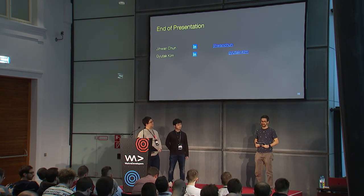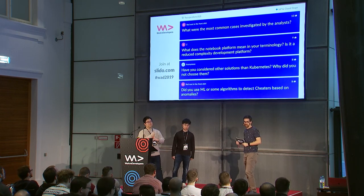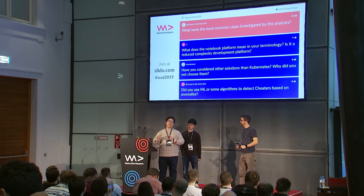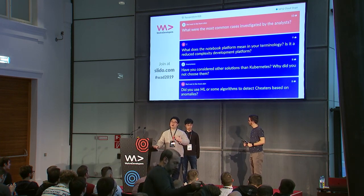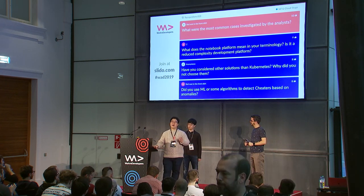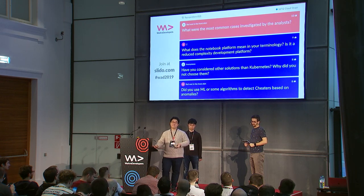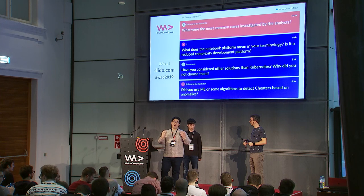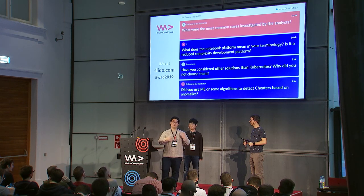We have a couple of questions. The top-voted question is: what were the most common cases investigated by the analysts? The most common case is of course related to product development — in our case, game development. For example, how many users are trying to buy a product, or how many users are returning to the game after finishing a session — user retention, active users, and KPIs like that. We also do ad hoc analysis like game balancing. Since we're a shooter game, we can look up which weapon is most preferred among users to balance the game and improve the product.